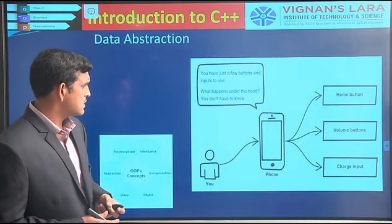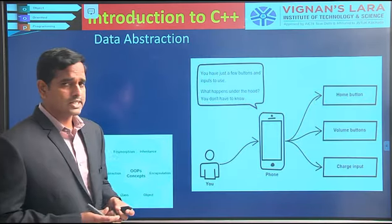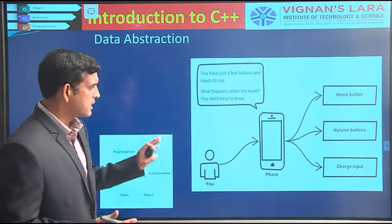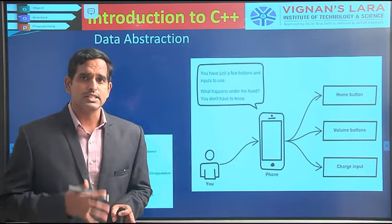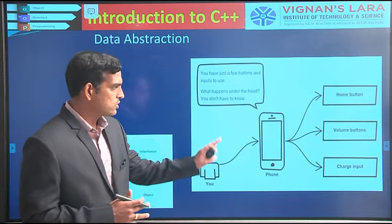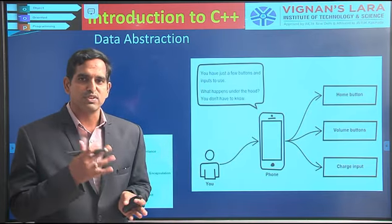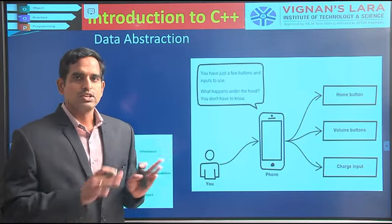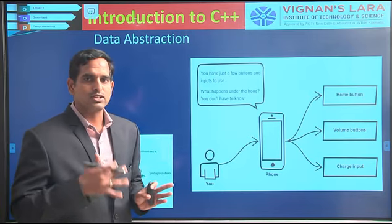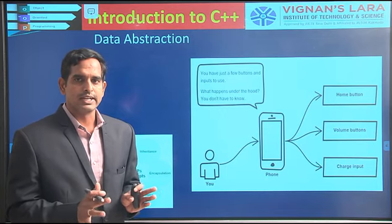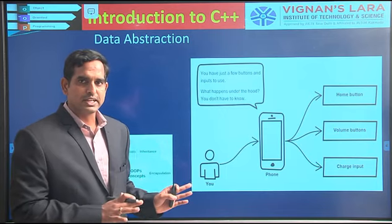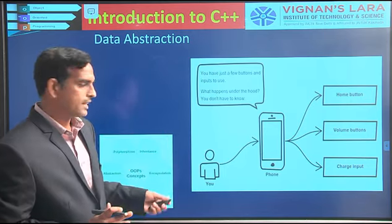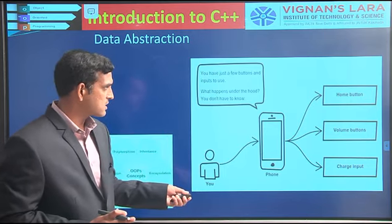In the previous session I told you what data abstraction is. Data abstraction is mainly about concealing your implementation details or unnecessary details from the user, and only showing what are the necessary details for easy operation. You are hiding unnecessary data and showing only the necessary data — hiding implementation details and showing only the operational details.